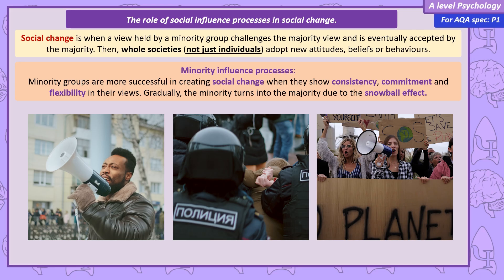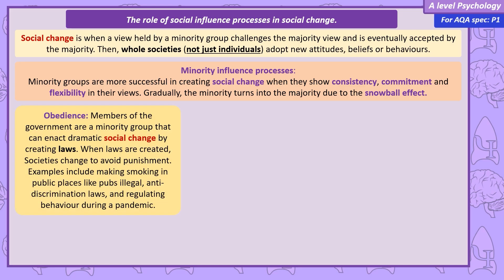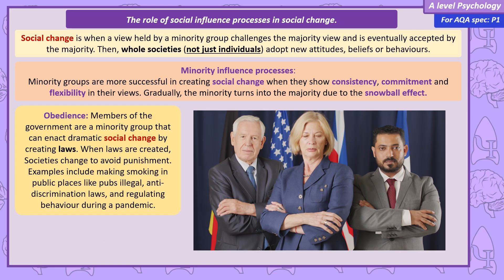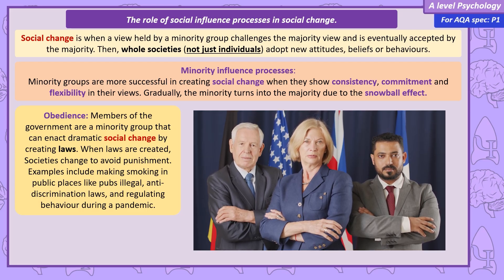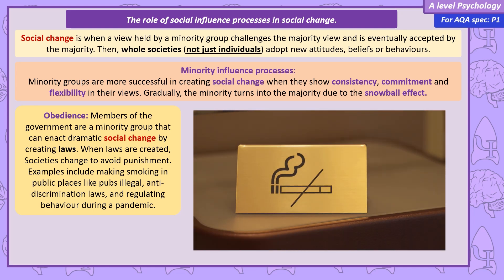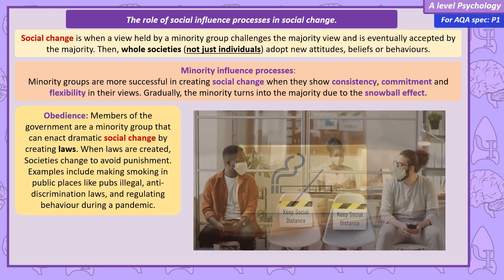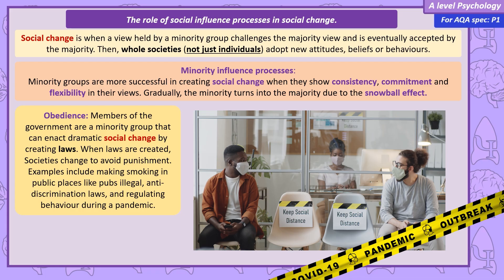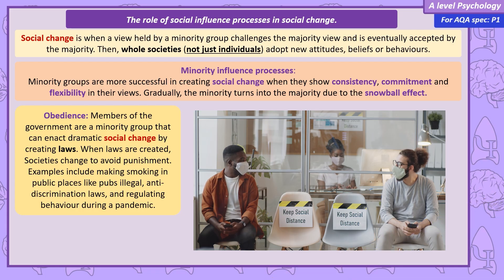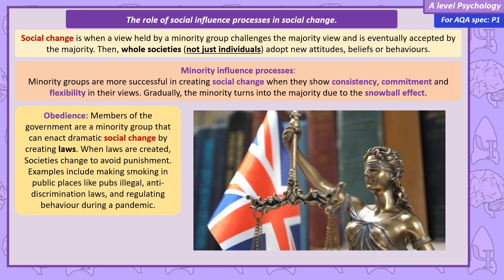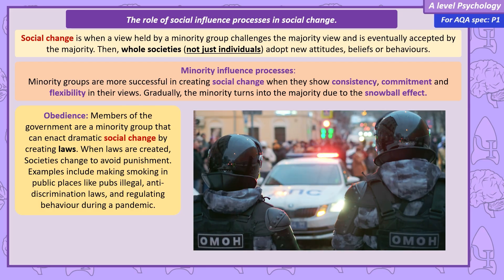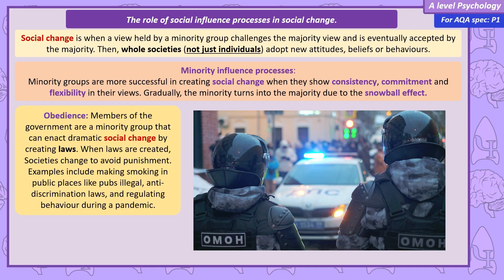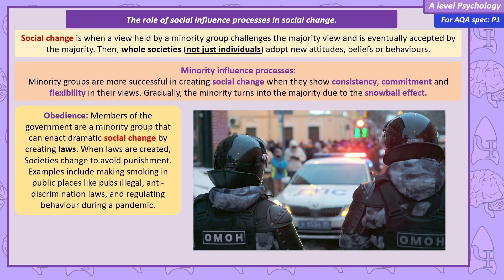We should also explain how minorities use both obedience and conformity to cause social change. Governments are minority groups, and they're able to influence entire societies by creating and enforcing laws. Examples include when smoking in public places like pubs was made illegal, social distancing and mask rules during the pandemic, or the passing of discrimination laws protecting characteristics such as age, disability, and sexual orientation. Even if they don't agree with these laws, members of society will alter their behaviour to the wishes of the minority group to avoid punishment.